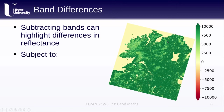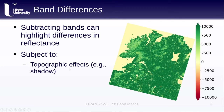However, taking band differences is subject to different constraints. We might be dealing with topographic effects — if images contain shadows, we can't cleanly compare differences across the scene. Similarly, differences in solar illumination between images taken in different seasons make it harder to compare them using band differences, so we might want to look at other options.